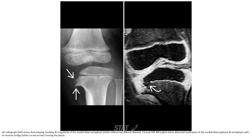AP radiographs show down-sloping, beaking, and irregularity of the proximal tibial metaphysis, consistent with Blount disease. There is abnormal ossification of the proximal tibial epiphysis and metaphysis with an osseous bridge crossing the physis.